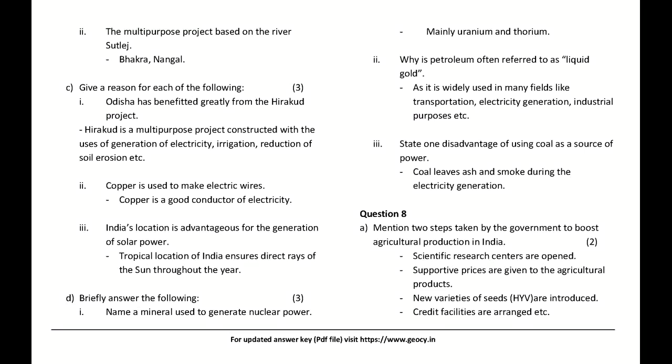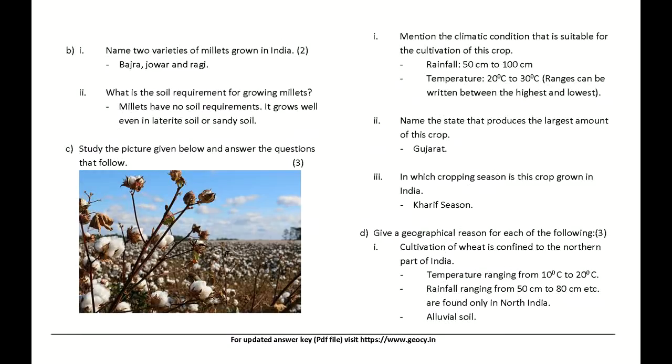Why is petroleum often referred to as liquid gold? Answer: It is widely used in many fields like transportation, electricity generation, and industrial purposes. State one disadvantage of using coal as a source of power: Coal leaves ash and smoke during electricity generation. Name two varieties of millets grown in India: Bajra, Jowar, and Ragi.